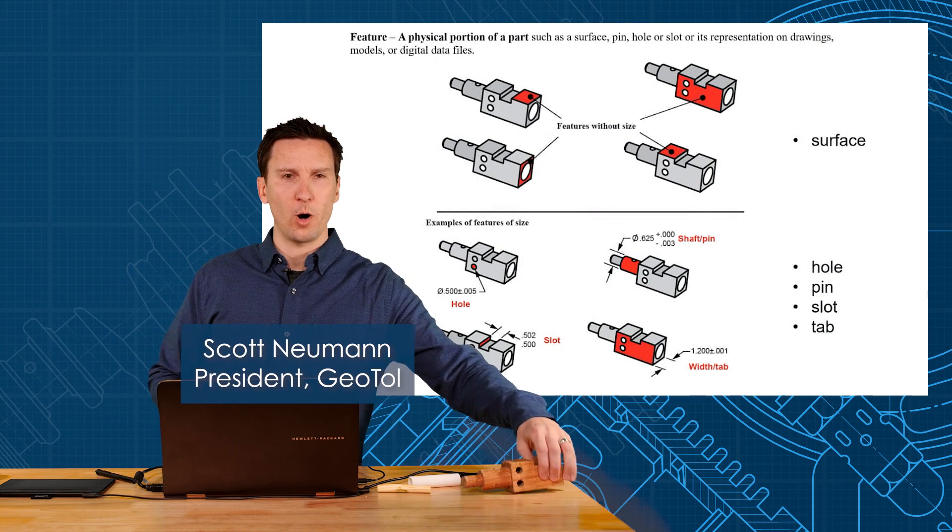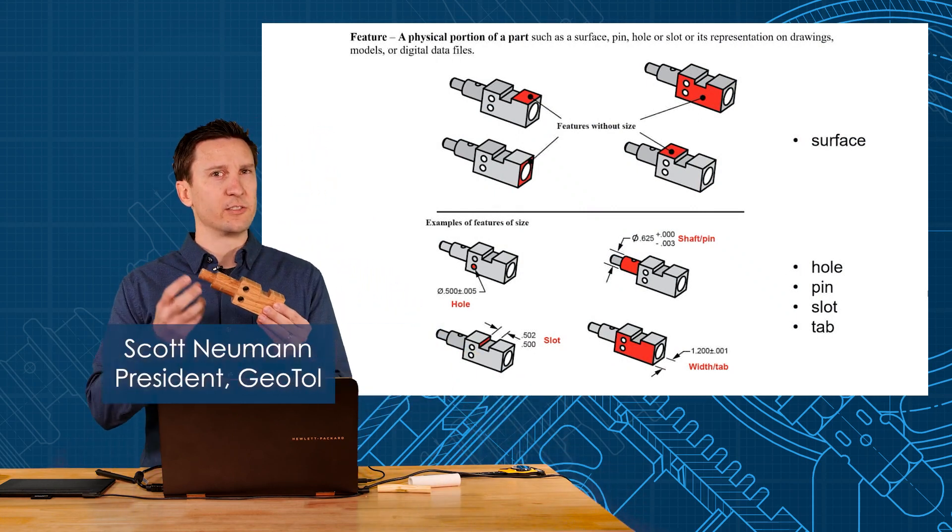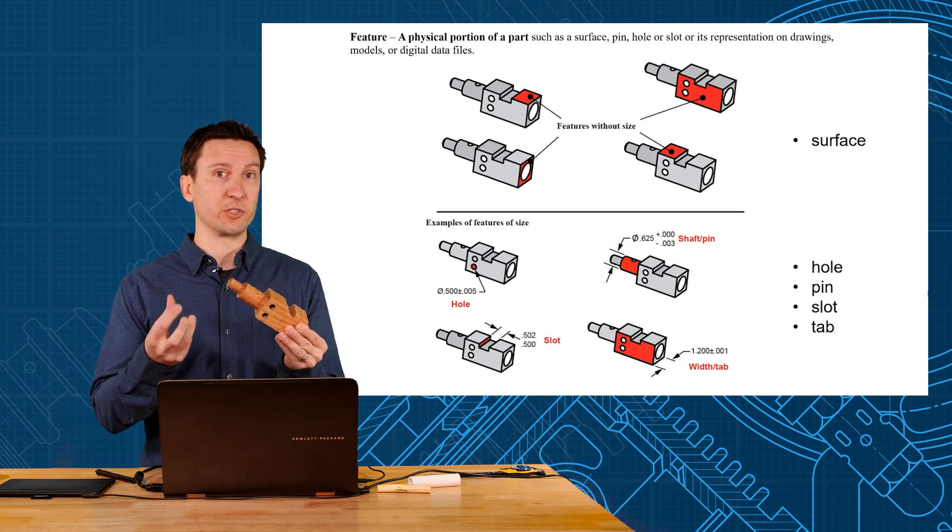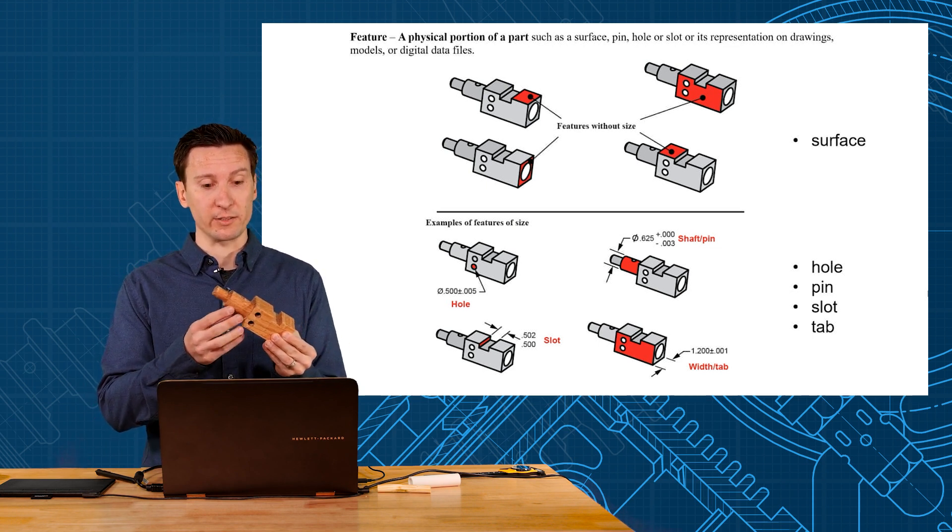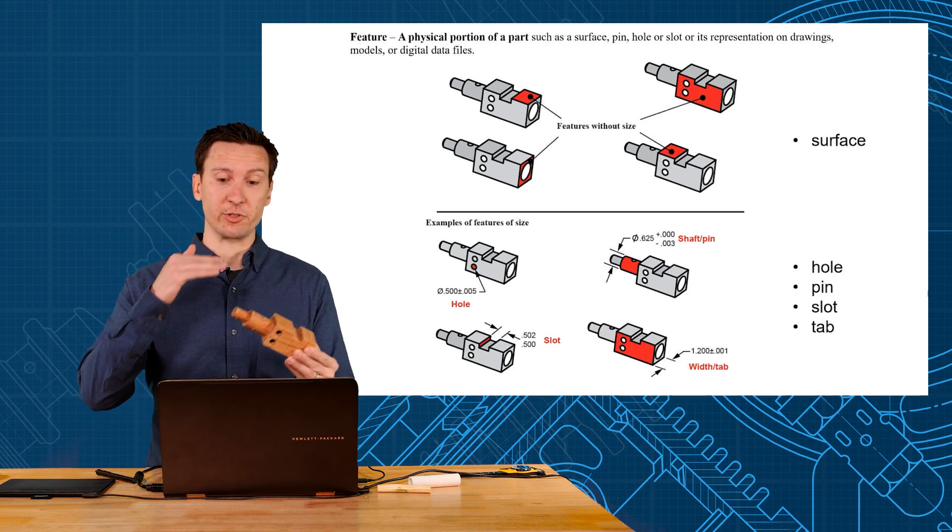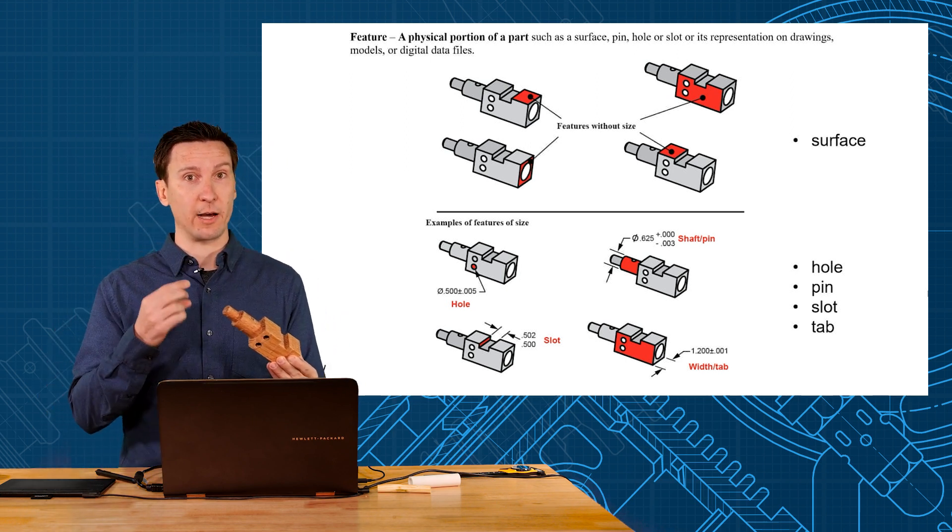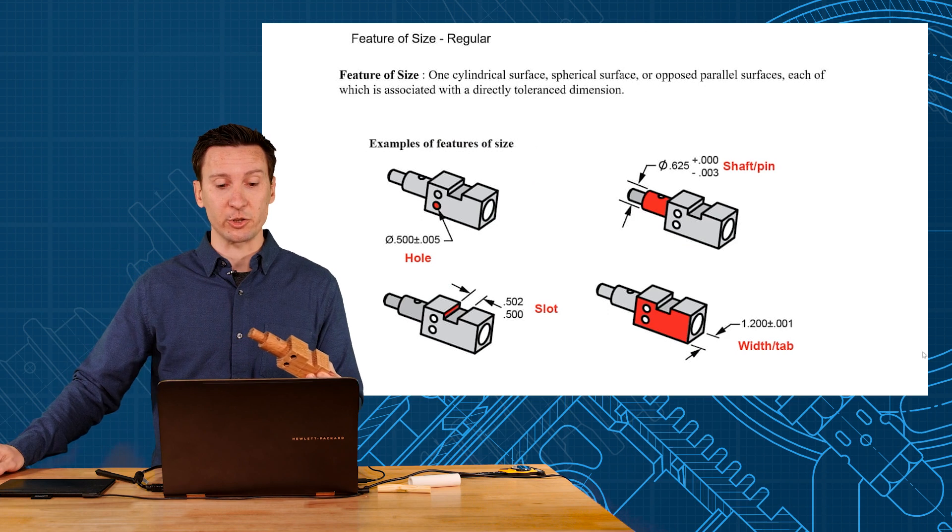A quick review from unit one: remember that a feature is a physical portion of a part, such as a surface, pin, hole, or slot and its representation on the drawing. There are two types of features: surfaces, and features of size like holes, tabs, slots, and pins. That's what we'll focus on in this section.